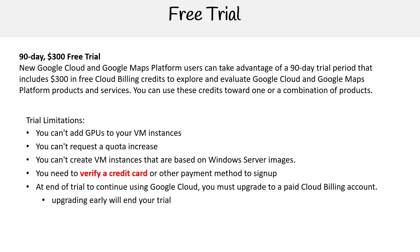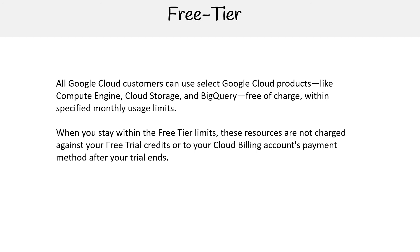That's one of the benefits of Google Cloud — with other providers like AWS, you have a high chance of going over your free trial into real spend. For free tier, all Google Cloud customers can use select Google Cloud products like Compute Engine, Cloud Storage, and BigQuery free of charge within specified monthly usage limits. When you stay within the free tier, the resources are not charged against your free tier credits or your cloud billing account payment method after your trial ends.